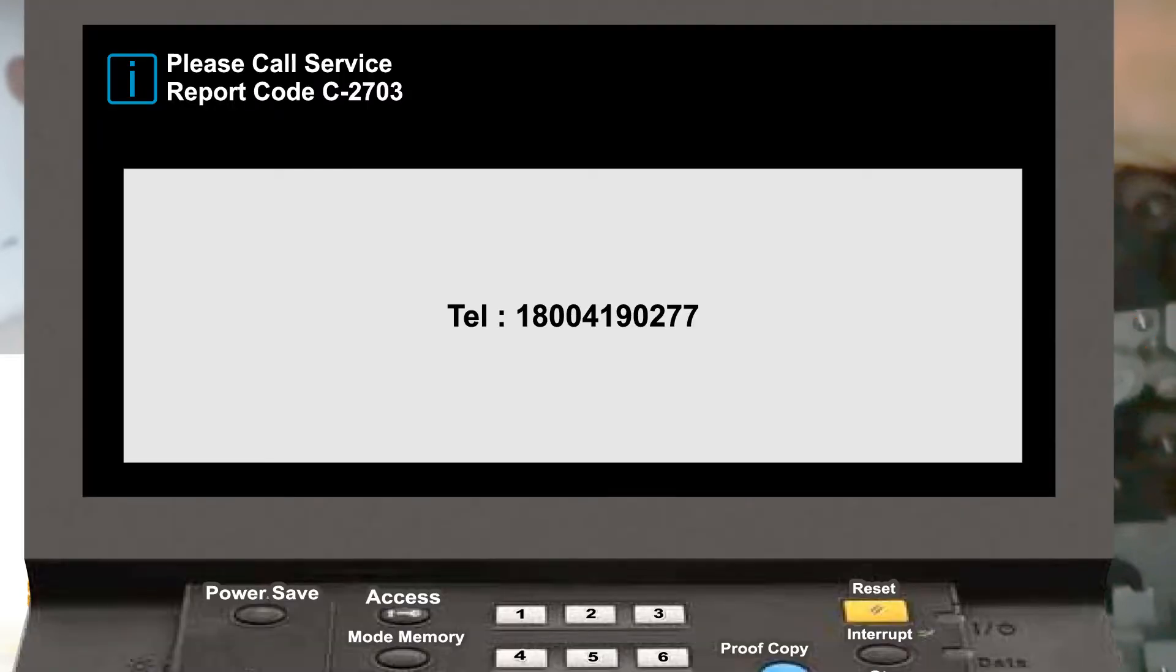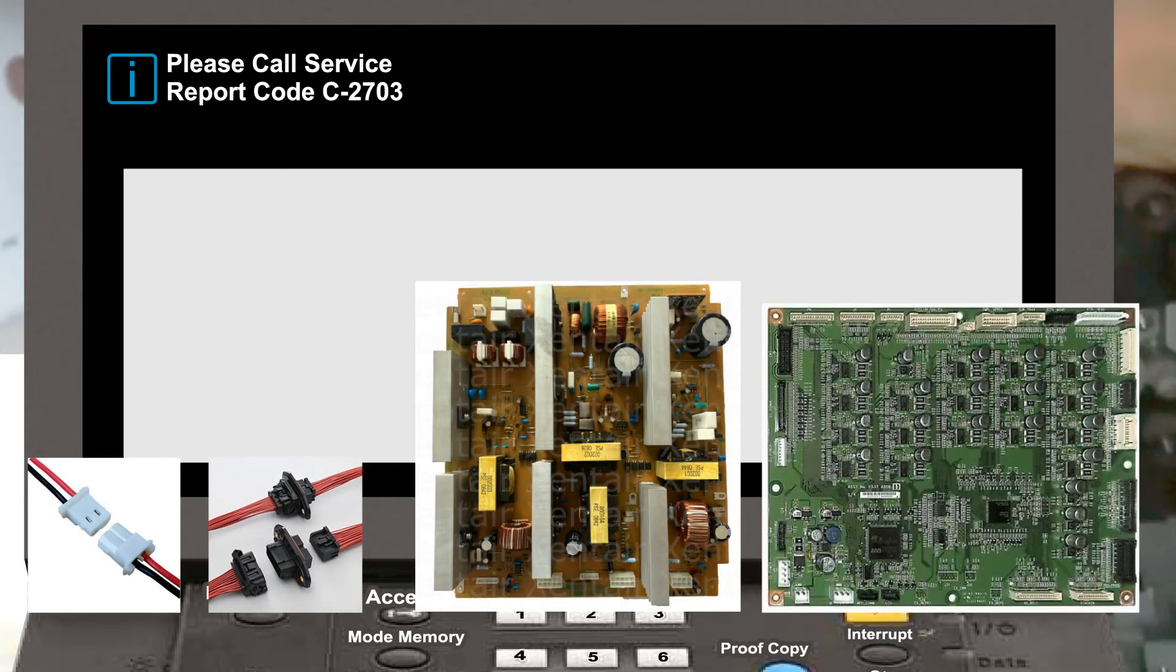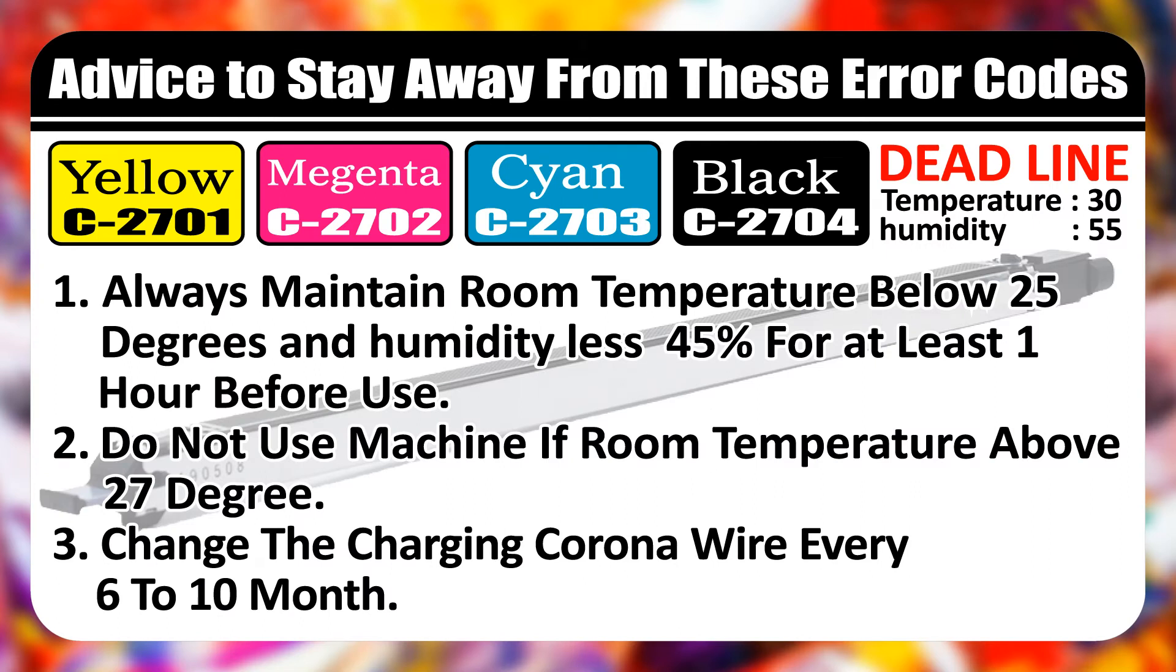Hope after proper cleaning, error code will not show. If problem not solved then you have to call a service engineer. Service engineer will check for all loose connectors, high voltage, or printer control board PRCB. Thanks for seeing this video. Hope after proper cleaning machine works fine. If you like this video please don't forget to like this video. Jai Shri Krishna. Some advice: always maintain room temperature below 25 degrees and humidity less than 45 percent for at least one hour before use. Do not use machine if room temperature is above 27 degrees. Change the charging corona wire every six to ten months.